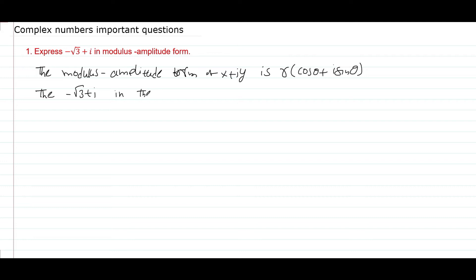The given complex number minus root 3 plus i is in the form of x plus iy. Comparing, x is equal to minus root 3 and y is equal to 1.